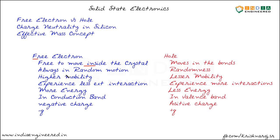There is always some random motion associated with these charged particles. The generation as well as recombination is also random — we will discuss generation rate and recombination rate later. Electrons have higher mobility compared to holes. Mobility is the ability to move, and we will discuss it further when we talk about drift current in semiconductors. Electrons experience less external interaction compared to holes.